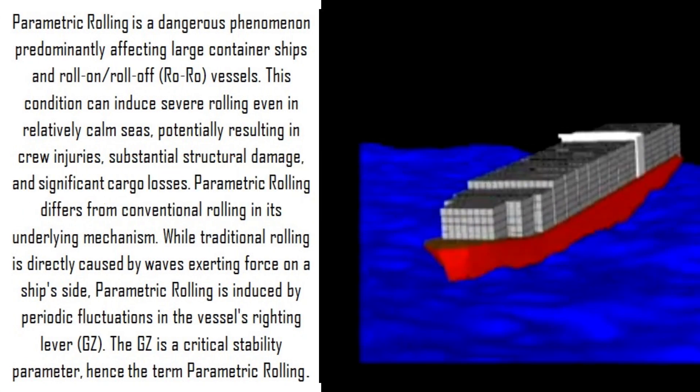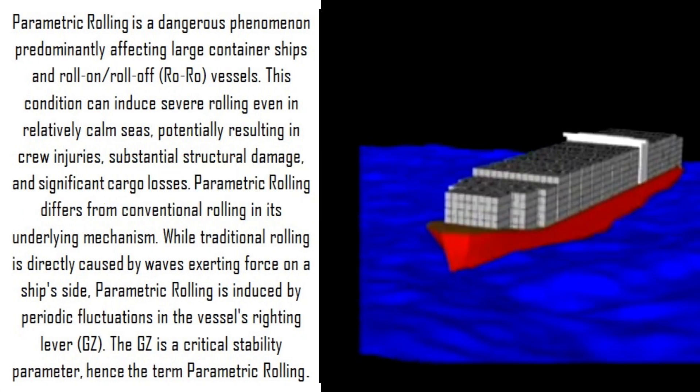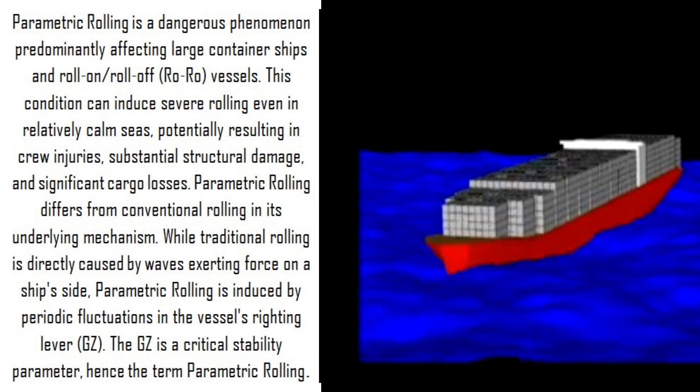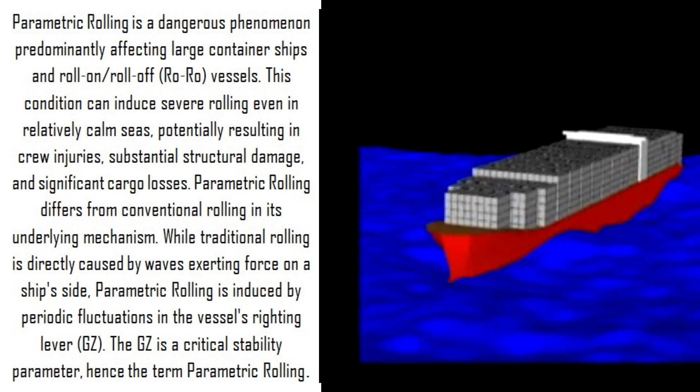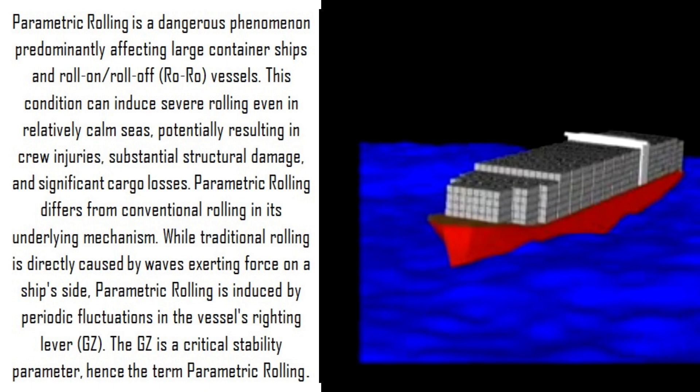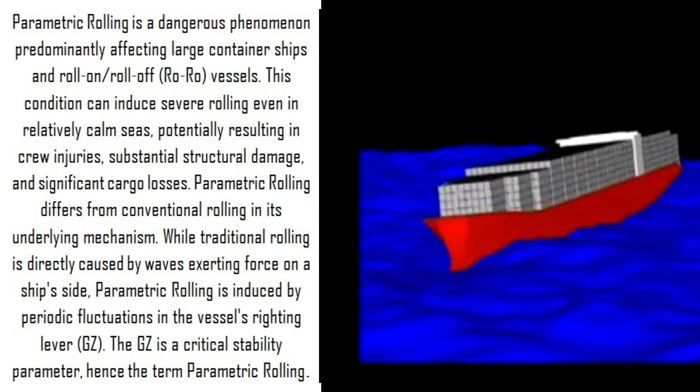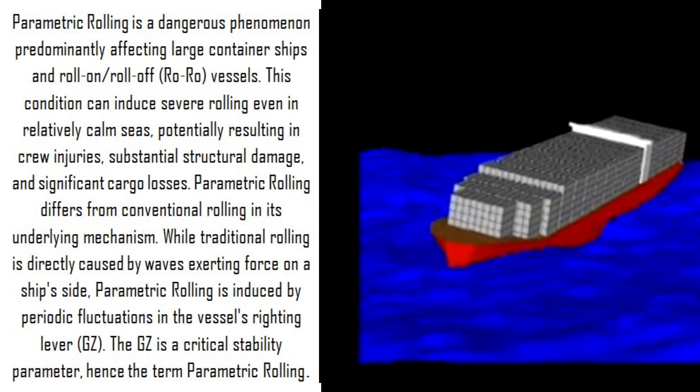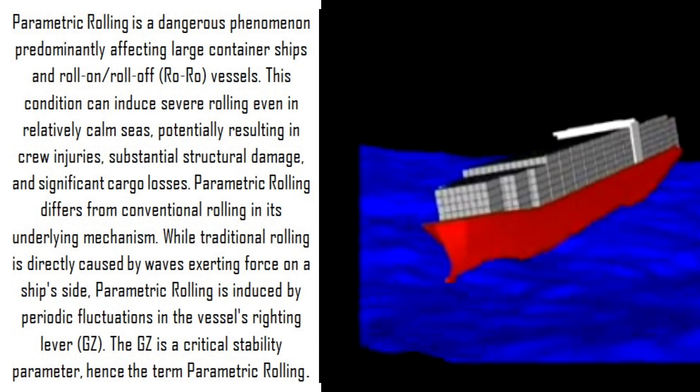This tutorial will address the following topics. Parametric rolling is a dangerous phenomenon predominantly affecting large container ships and roll-on roll-off vessels. This condition can induce severe rolling even in relatively calm seas, potentially resulting in crew injuries, substantial structural damage, and significant cargo losses.